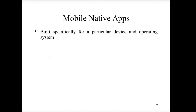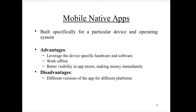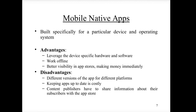A mobile native app is built specifically for a particular device and operating system. Advantages include leveraging device-specific hardware and software, the ability to work offline, and better visibility in app stores — allowing you to monetize directly through per-download payments. Disadvantages include maintaining different versions for different platforms, higher update costs, and the requirement to share subscriber information with the app store. In this lecture, when we talk about Android programming, we are talking about native apps.